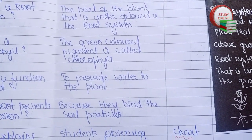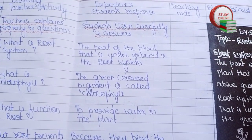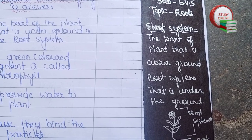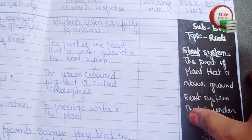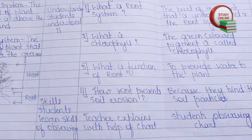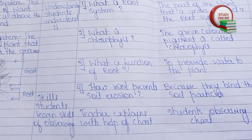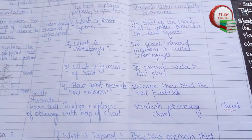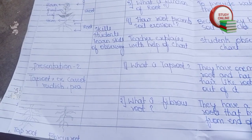We ask questions and students give the answers. Here you can see the blackboard work — shoot system — and we can also draw a diagram on the blackboard. The teacher explains with the help of a chart and students observe the chart. For the teaching aid, we write 'chart.' Now here you can see Presentation Part 2.